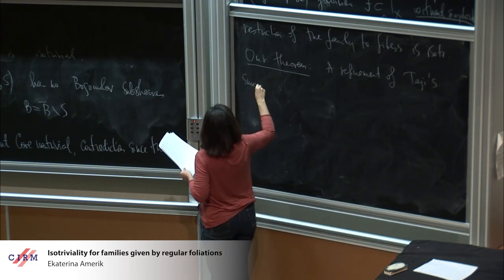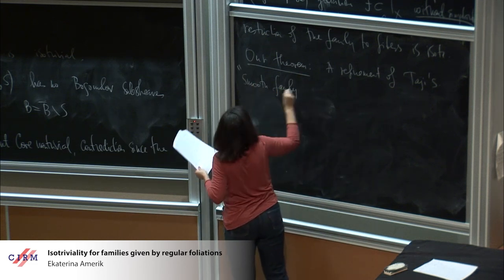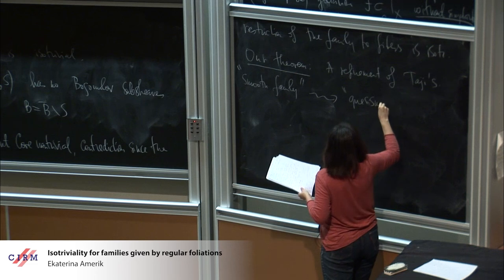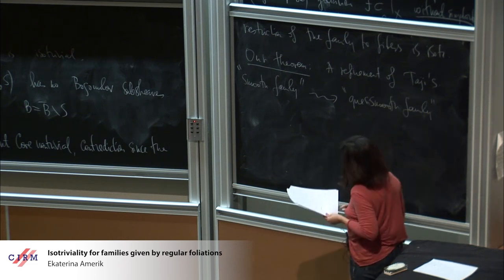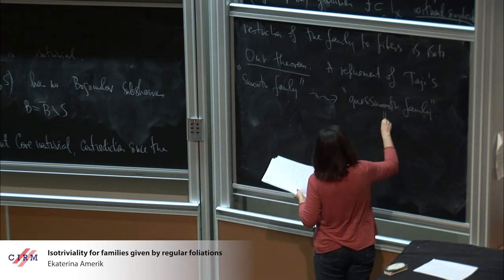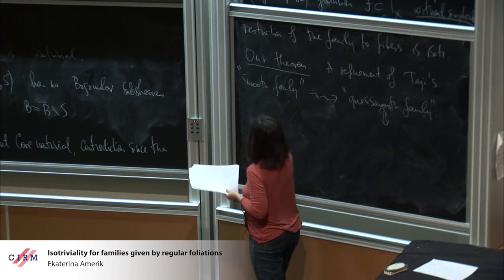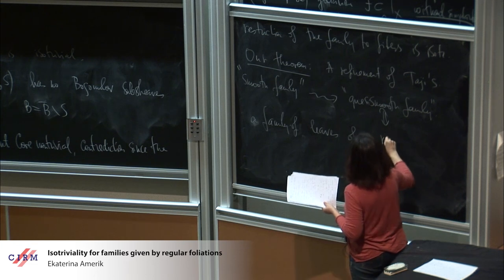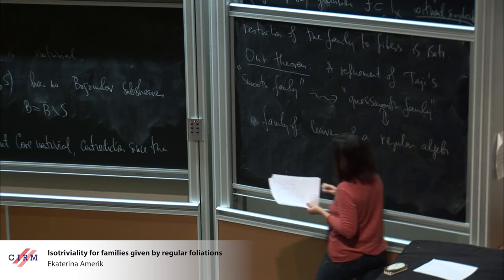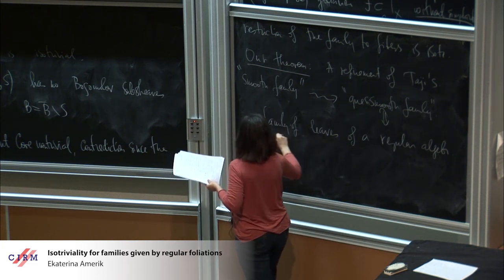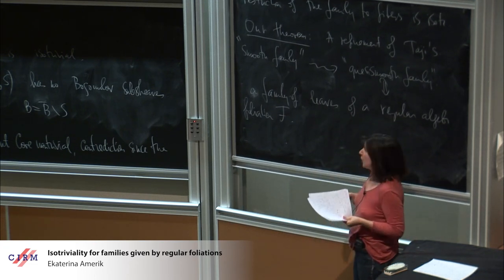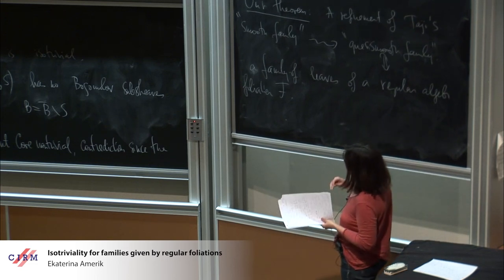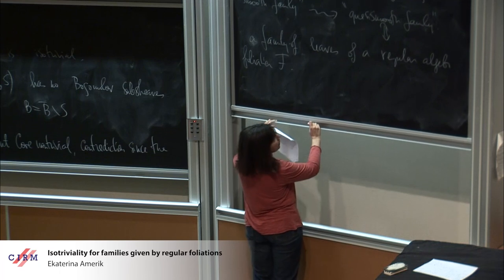This is the same thing as a family of leaves of a regular algebraic foliation F. Why is it quasi-smooth? Because in such a family, the only singularities you get are multiple fibers with a smooth reduction. The reason is Ehresmann's stability theorem.